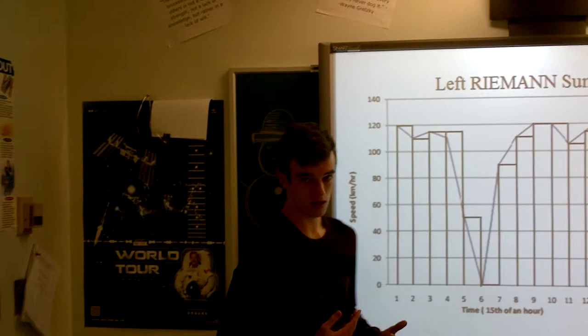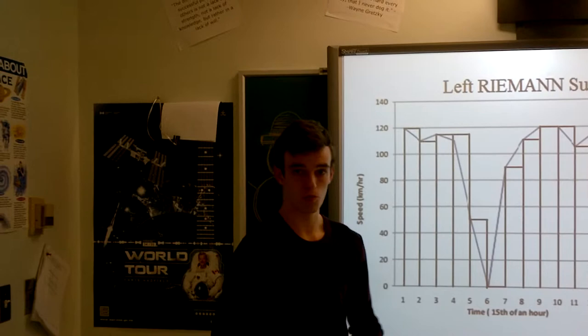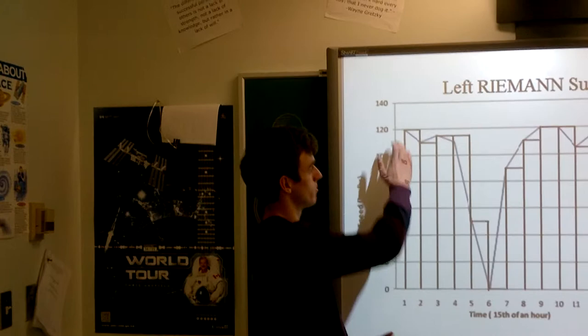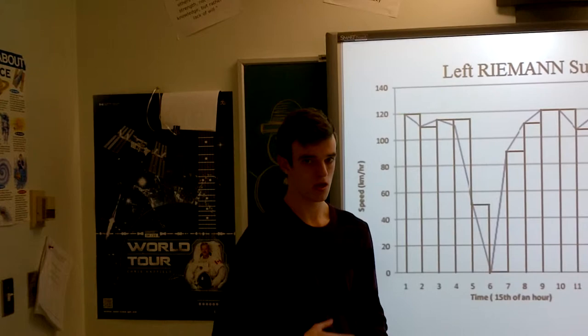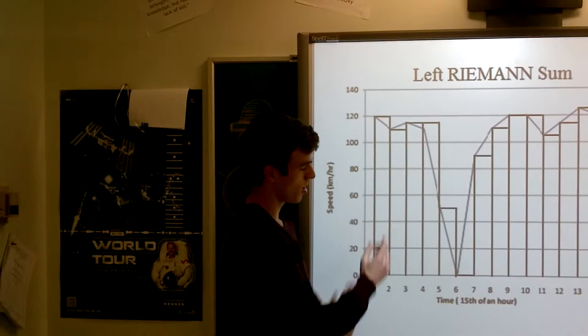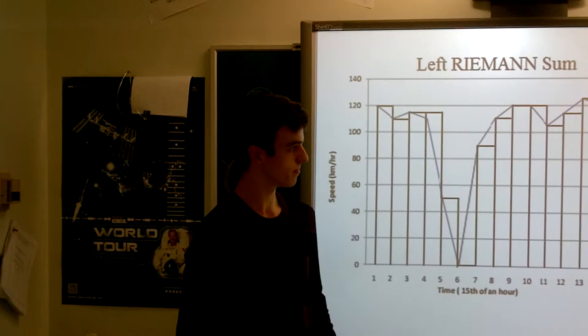For my Left Riemann sum, you want to start at the left-most point on the graph and then extend it over however many subdivisions you have. Right here, I was going 120 kilometers an hour when I took the data, and that would be over four minutes. So the total distance I traveled in this rectangle on the graph was 8 kilometers.